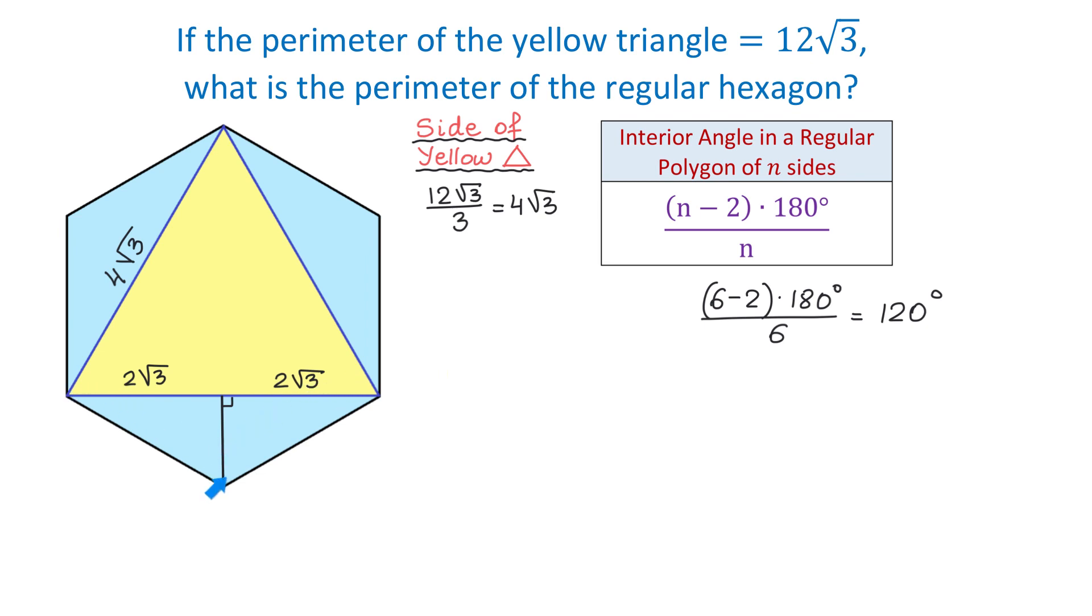Then, because this perpendicular bisects the angle, each of these angles will be 60 degrees. And now, here we have a right triangle, and if one of the acute angles is 60 degrees, the other one will be 30 degrees.